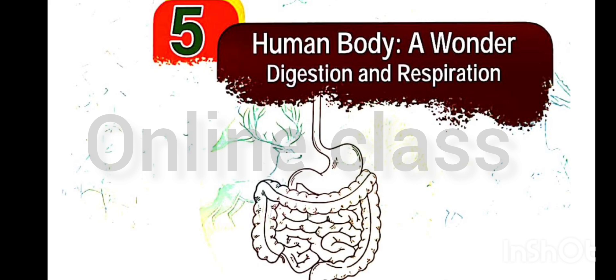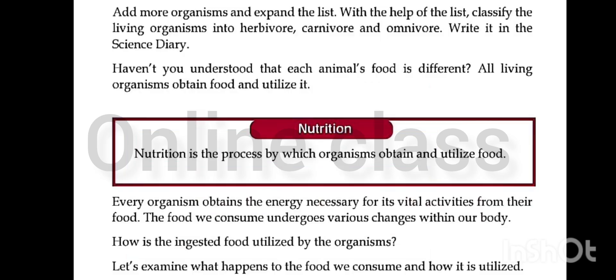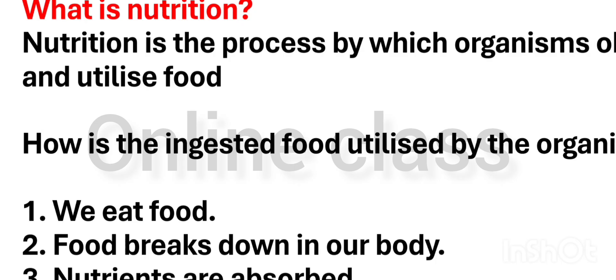We are going to take a look at the table. The table includes: cow eats grass, goat eats leaves, cat, bear eats honey, rabbit eats grass, leaves, and tubers, and human eats cooked rice. What is nutrition?